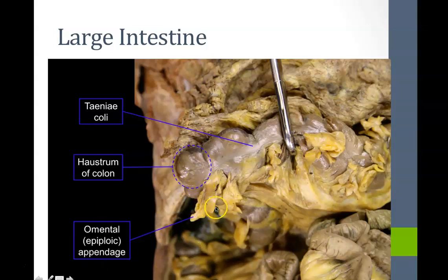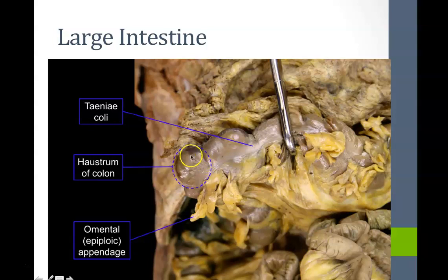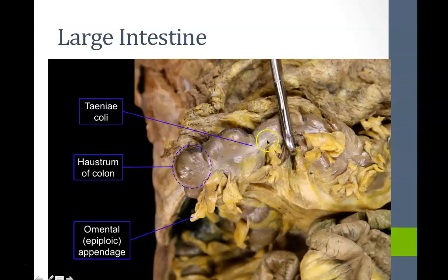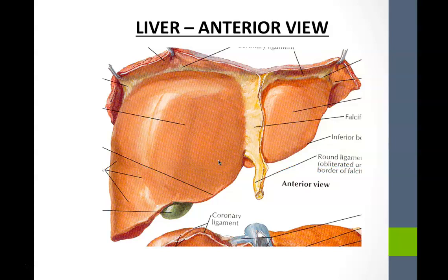Features of the large intestines include epiploic appendages, or omental appendages — fat hanging off the colon whose function is unknown. There are also small pouches called haustra (singular: haustrum). Regarding the muscular layer called muscularis externa, which normally has a complete circular and longitudinal smooth muscle layer, on the large intestines the longitudinal layer is incomplete, forming bands called taeniae coli instead.